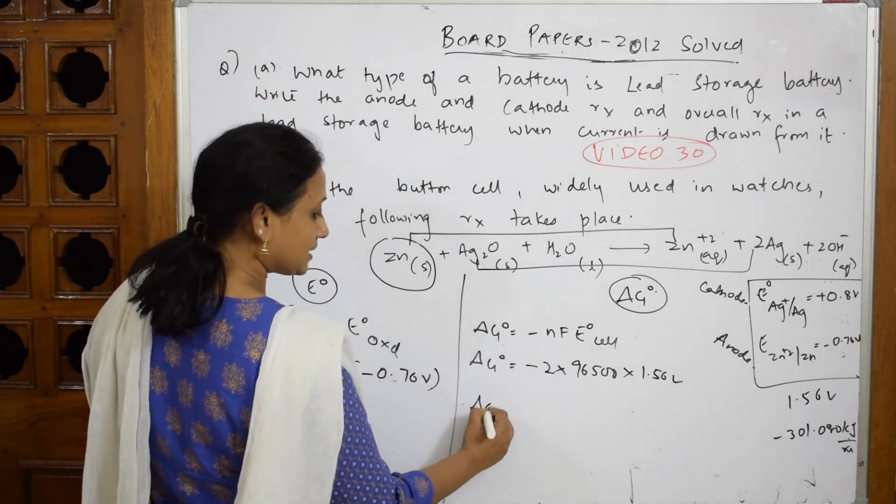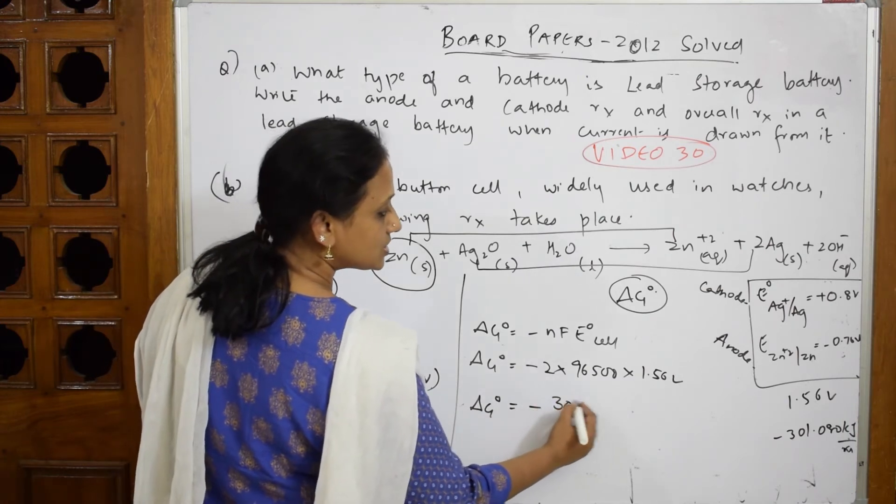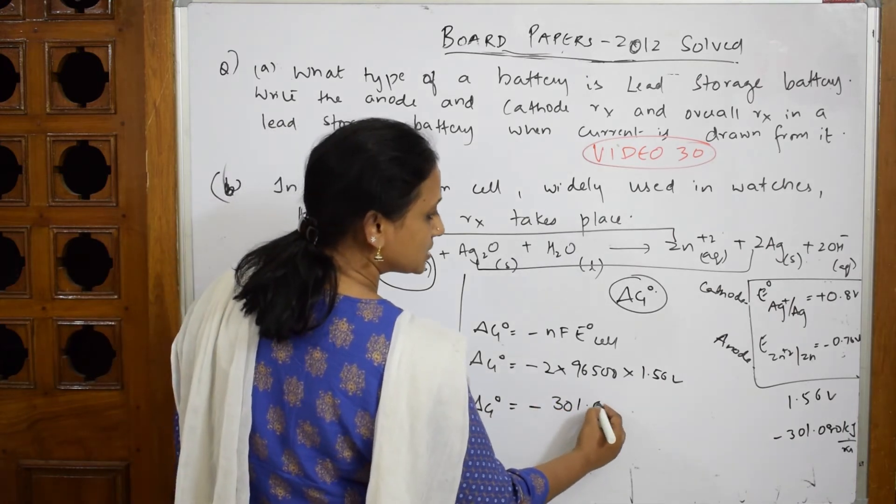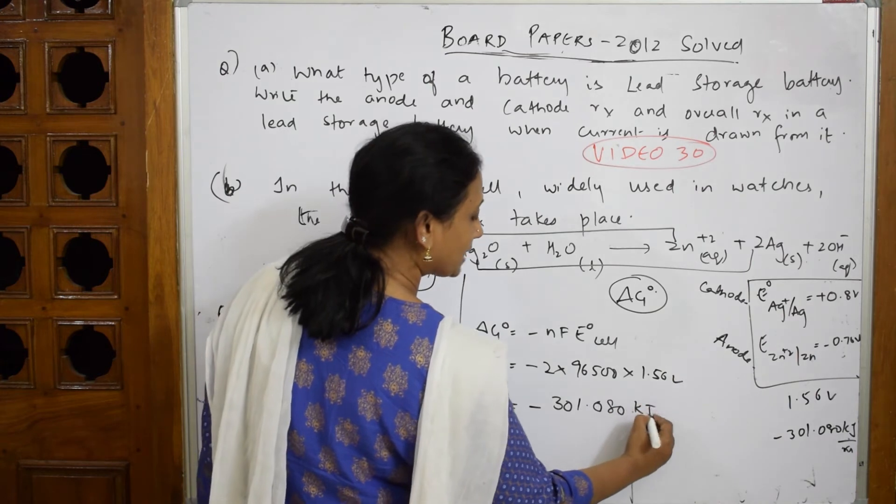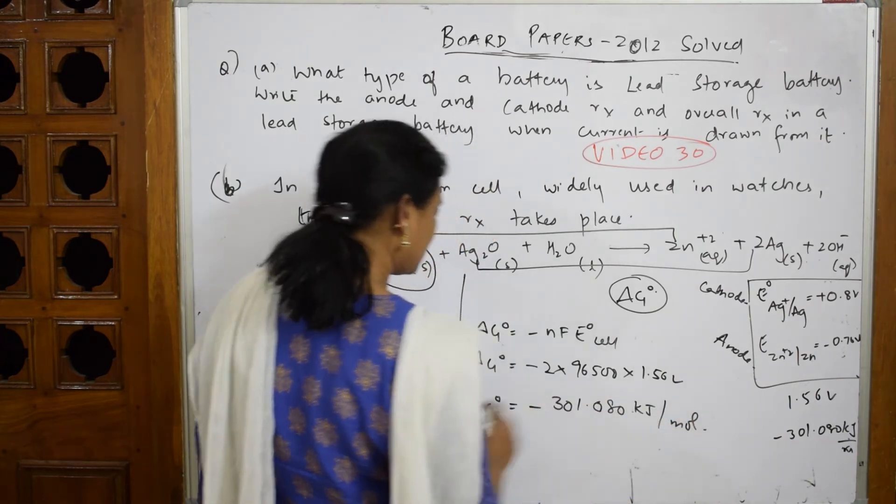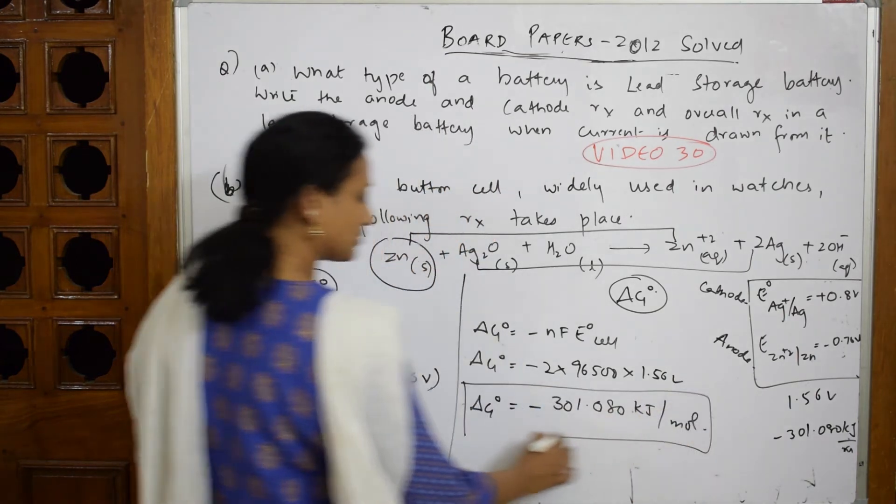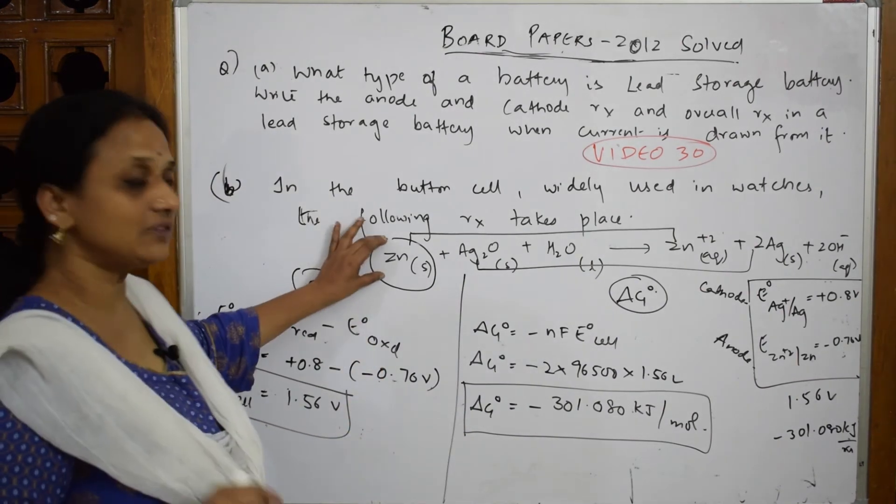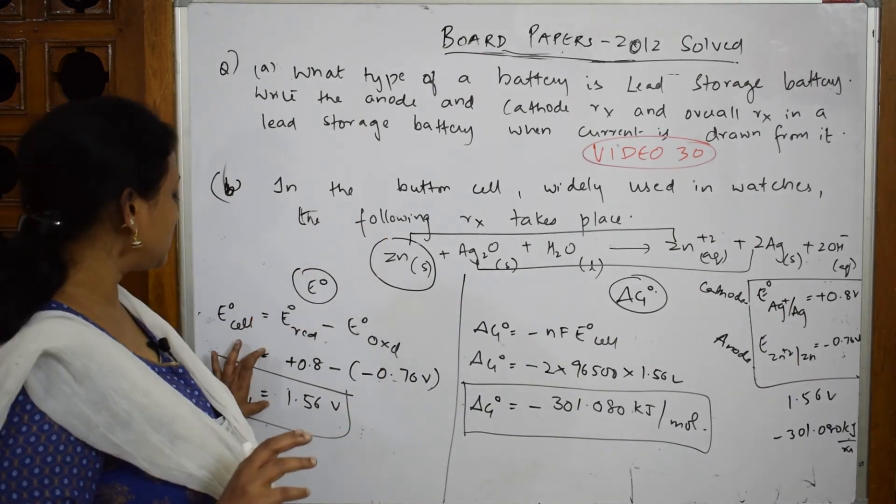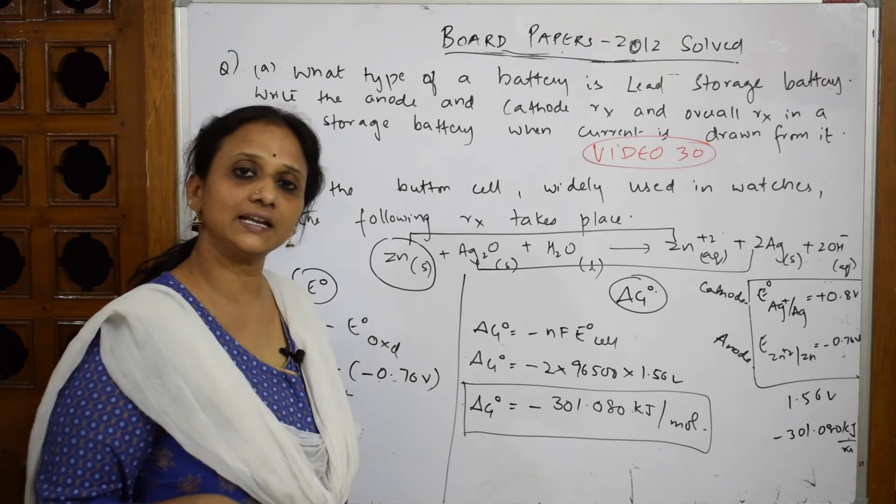So -2, one Faraday is equal to 96,500, E° cell value I got as 1.56 volts. When I multiply, I get an answer of -301.08 kilojoules per mole. This is your ΔG° value. Important: knowing which is oxidation, substituting in the formula, taking it further to calculate ΔG°.